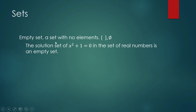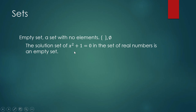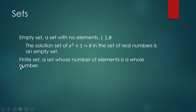What is an empty set? An empty set is a set with no elements, and these are our symbols for the empty set. An example of an empty set is the solution set of x² + 1 = 0 in the set of real numbers — it is an empty set. There is no real number solution for this equation. Think of any real number: if you square it, it will always be zero or positive, so x² + 1 can never equal zero. Another example of an empty set — your love life.